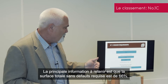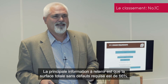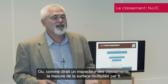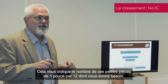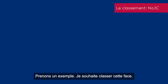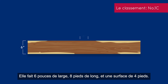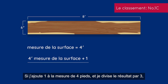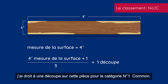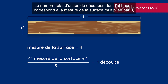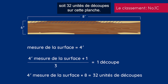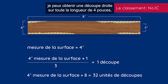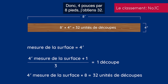The main thing to remember for 1 Common: the total area required to be clear is 66 and two-thirds percent — two-thirds of the board has to be clear. As an inspector, that's surface measure times 8, which tells us how many 1-inch by 12-inch pieces we need. Example: a board 6 inches wide and 8 feet long has 4-foot surface measure. 4 plus 1 divided by 3 allows 1 cutting for a 1 Common. Total cutting units needed is 4 times 8 equals 32. Measuring a straight rip of 4 inches for 8 feet gives exactly 32 cutting units.